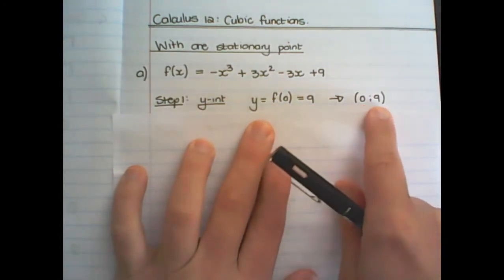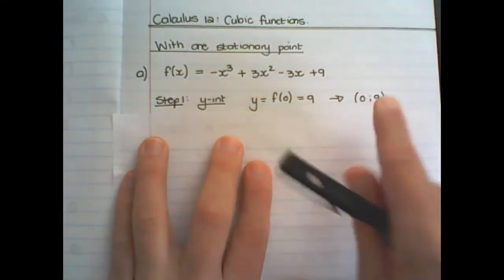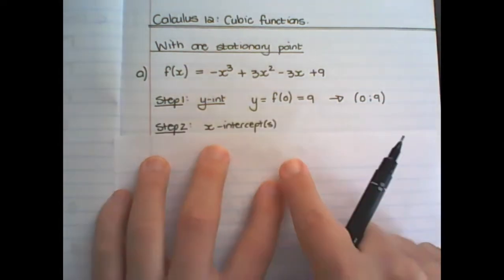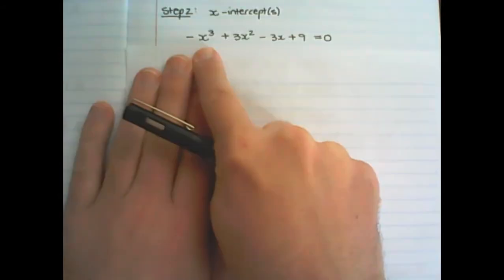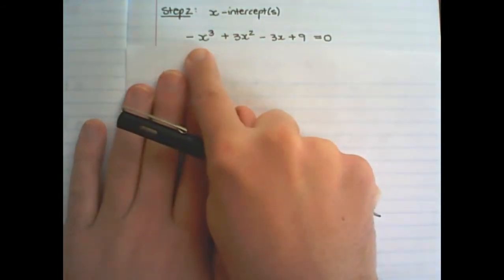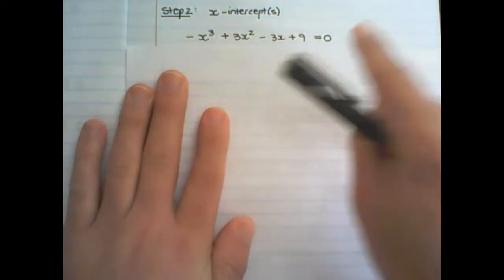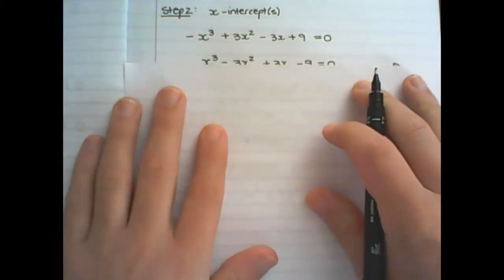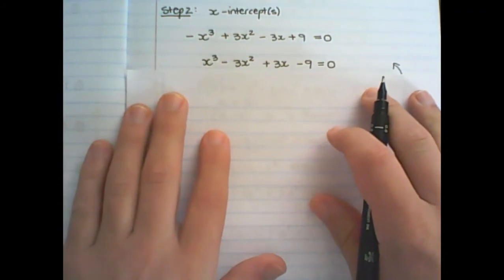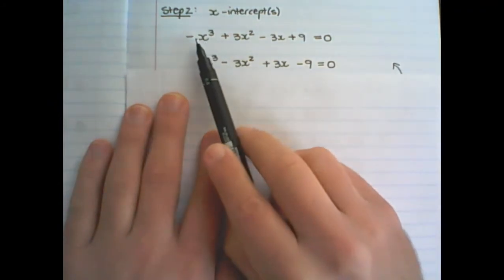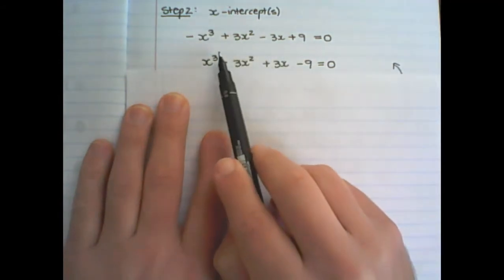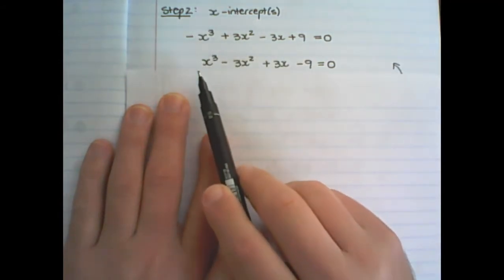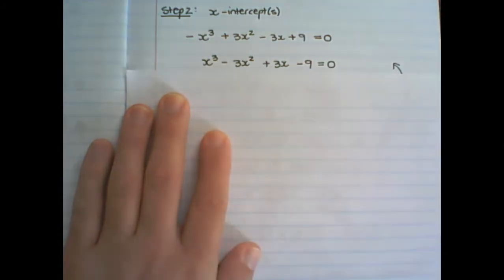So where x is zero, y is 9. Step two is to find the x-intercept or intercepts. In order to find the x-intercept, I take the equation of f(x) and place it equal to zero. For convenience I change all the signs, dividing by negative 1 everywhere, so I have x cubed that is positive, which is a bit easier to factorize.